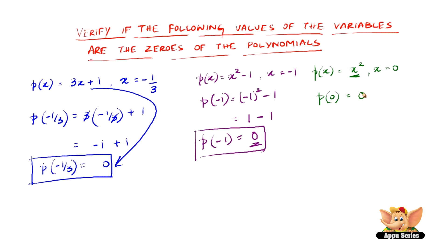p of 0 is 0 squared. 0 squared is definitely 0, and therefore, 0 is the zero of x squared.